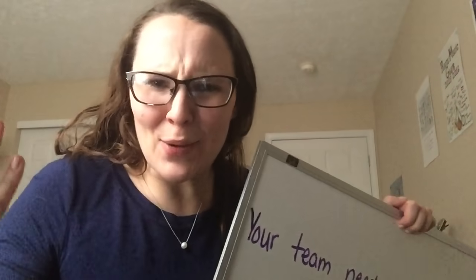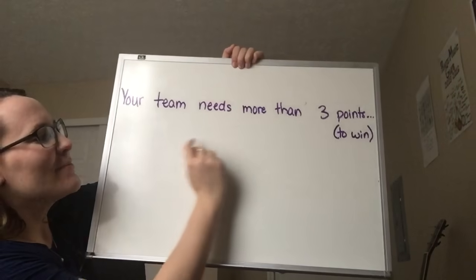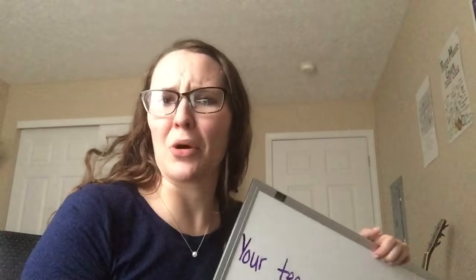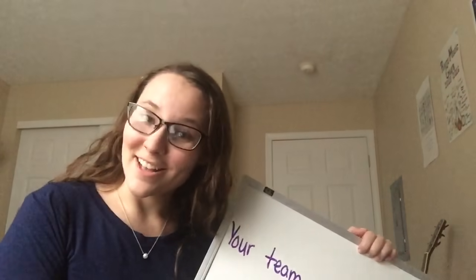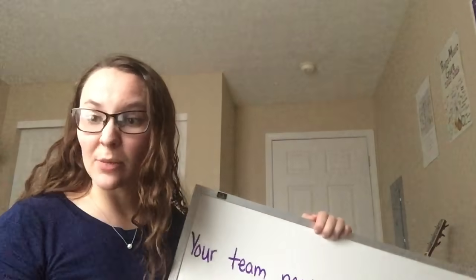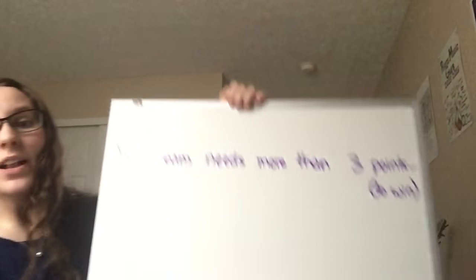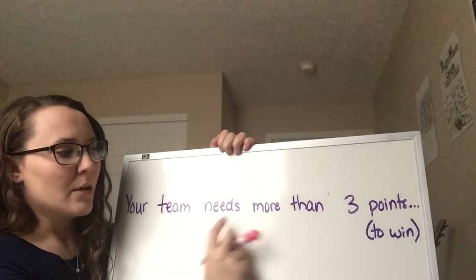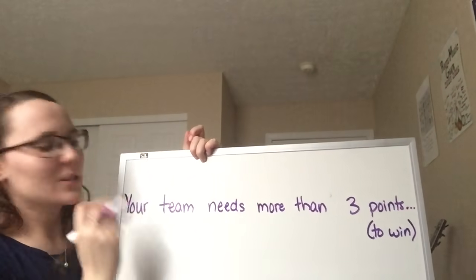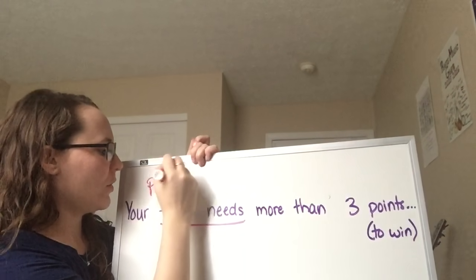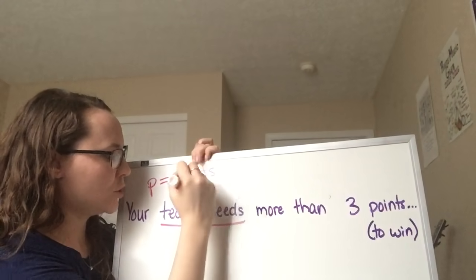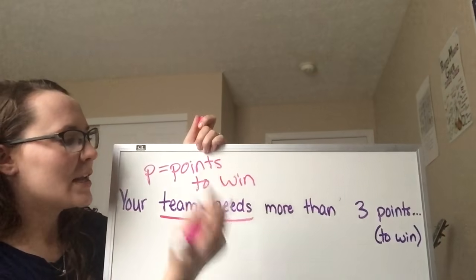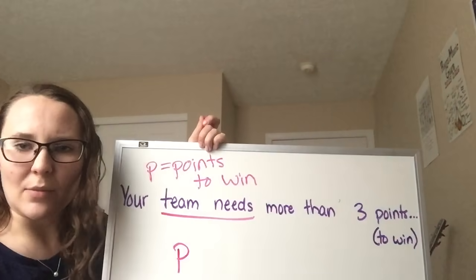Here's our next example: your team needs more than three points to win. Step number one, defining our variable — what don't we know in this situation? We're comparing the points that the team needs to win. So what we are going to call P is going to be points — P equals points needed to win. That is what we are trying to do. So P is our variable. Step number one, done.